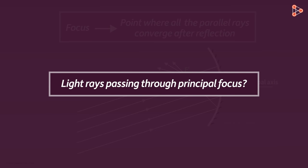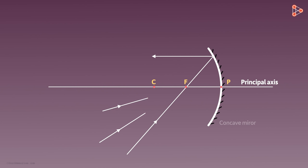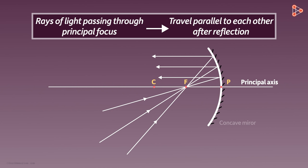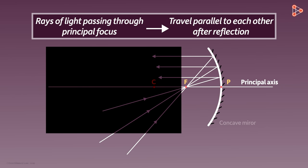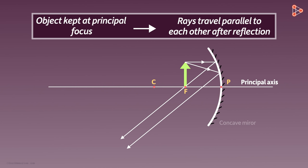What if the light rays are passing through the principal focus? That means the light rays won't be parallel. Consider a ray from a point on the object passing through the principal focus and incident on the mirror — it will be reflected according to the laws of reflection. Consider two more rays from different points, both passing through the principal focus. After reflection from the concave mirror, we see that they all travel parallel to each other. So if rays of light pass through the principal focus and are incident on the mirror, after reflection they travel parallel to each other. This is true for any position behind the principal focus, and even if the object is kept at the principal focus.